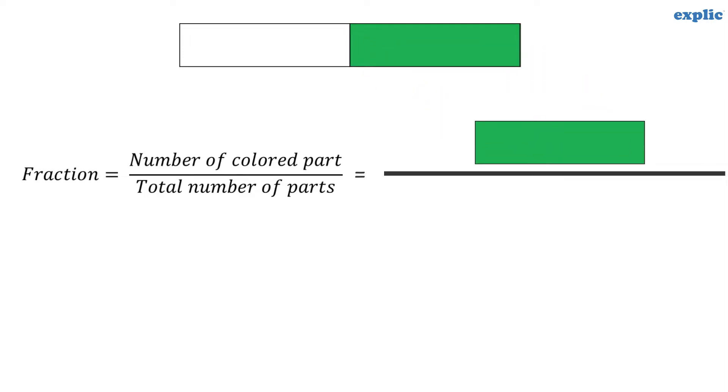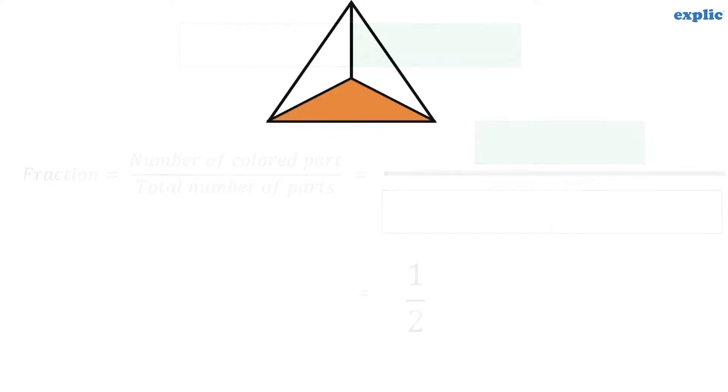The fraction of the colored part of the image shown is the number of colored parts divided by the total number of parts, which is 1 by 2. Similarly, the fraction of the colored part of the image shown is 1 by 3.